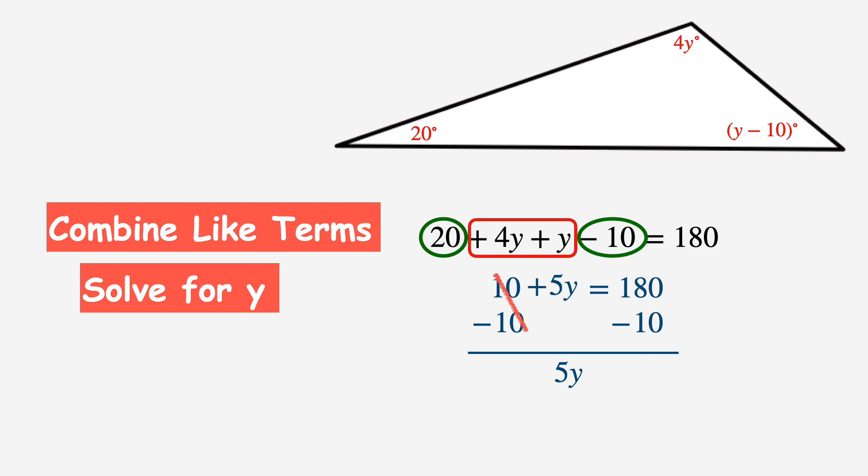Moving to the right side, 180 minus 10 is 170. Now to solve for y, I need to divide each side of this equation by 5. The 5s cancel each other out, leaving just the y. And 170 divided by 5 is 34. So now I know that y is precisely 34 degrees.